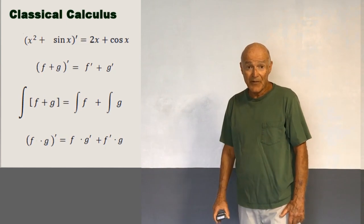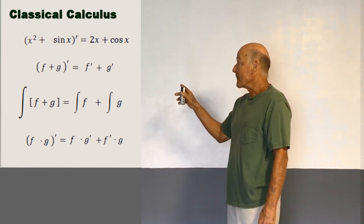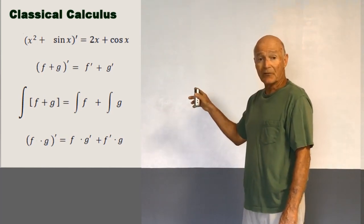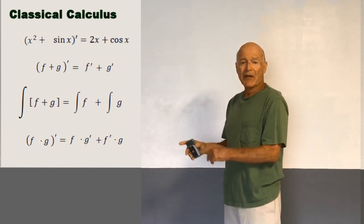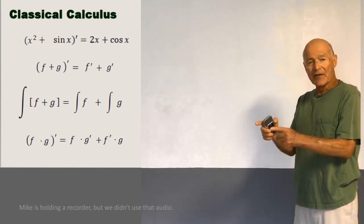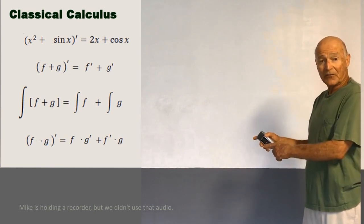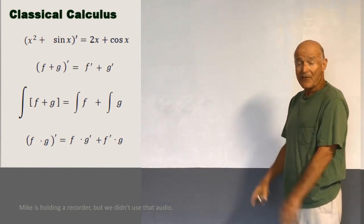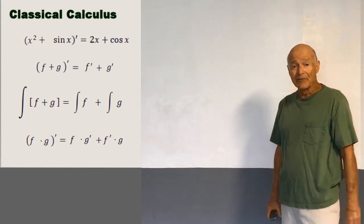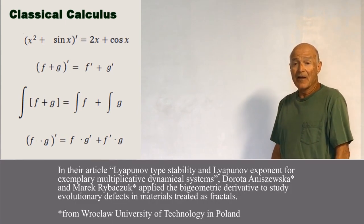And the same is true for the classical integral. The classical integral of a sum is the sum of the classical integrals. It's like term-by-term integration. When you integrate a sum of functions, you just integrate the first, second, and third terms, and add all the results together.